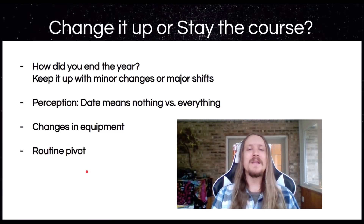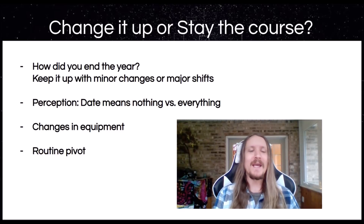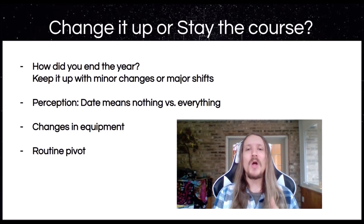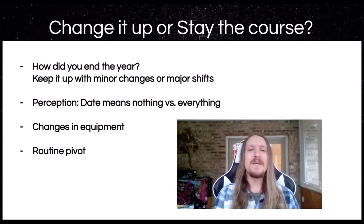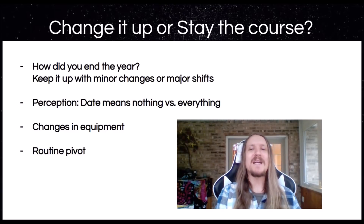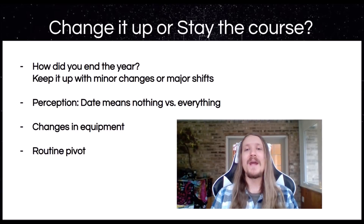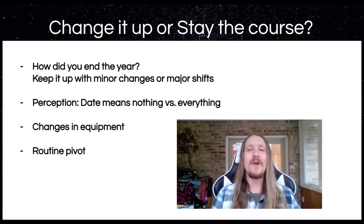Routine pivot. This goes way beyond trading and is extremely important. I cannot stress enough how sleep routine, health routine, and physical and mental wellbeing all come first. If these are not aligned, it doesn't matter how good a trader you are. If I'm sleeping four hours a day, eating junk food, and feeling sick, I'm not going to be a good trader. We have to have these aspects of our lives aligned first to successfully trade. It's the base of the pyramid, stealing from Maslow's hierarchy of needs.